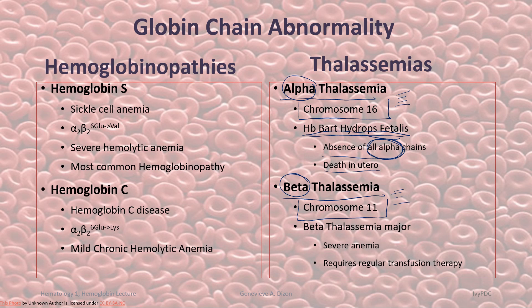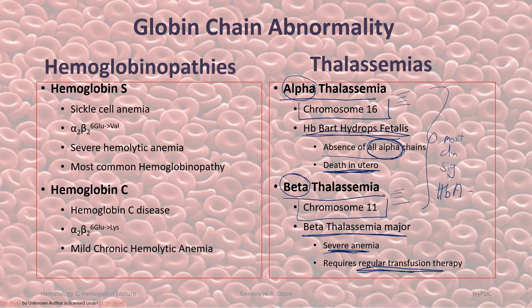Hemoglobin Bart's hydrops fetalis causes death in utero, meaning the fetus does not survive — it dies in the womb. Sometimes they are born but have very slim chance of survival as they are incompatible with life. An example of beta thalassemia is beta thalassemia major, which causes severe anemia requiring regular transfusion therapy. Both alpha and beta thalassemia are the most clinically significant because adult hemoglobin A is made up of two alpha chains and two beta chains, so a defect in either causes major problems.